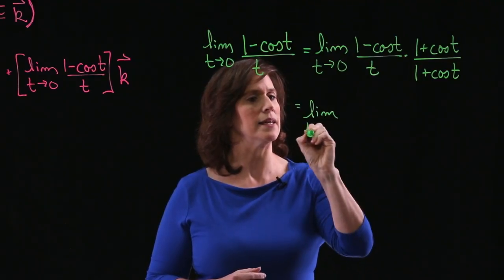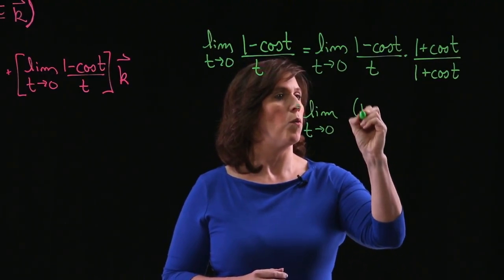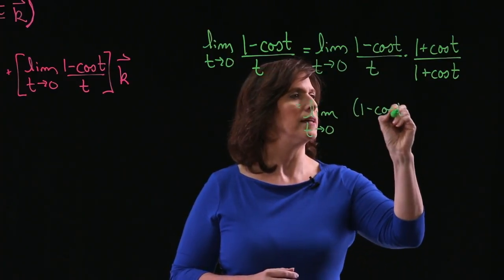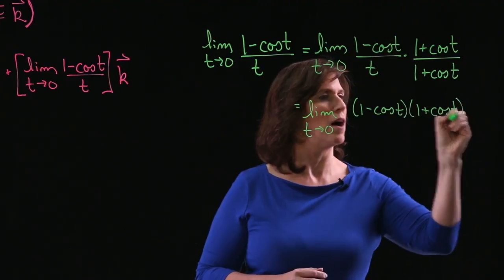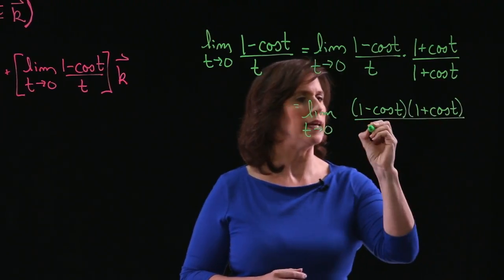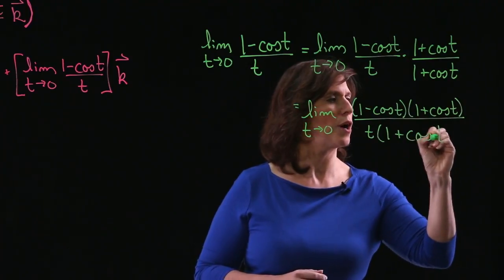My limit then becomes the limit as t approaches 0 of 1 minus cosine t times the quantity 1 plus cosine t all over t times the quantity 1 plus cosine t.